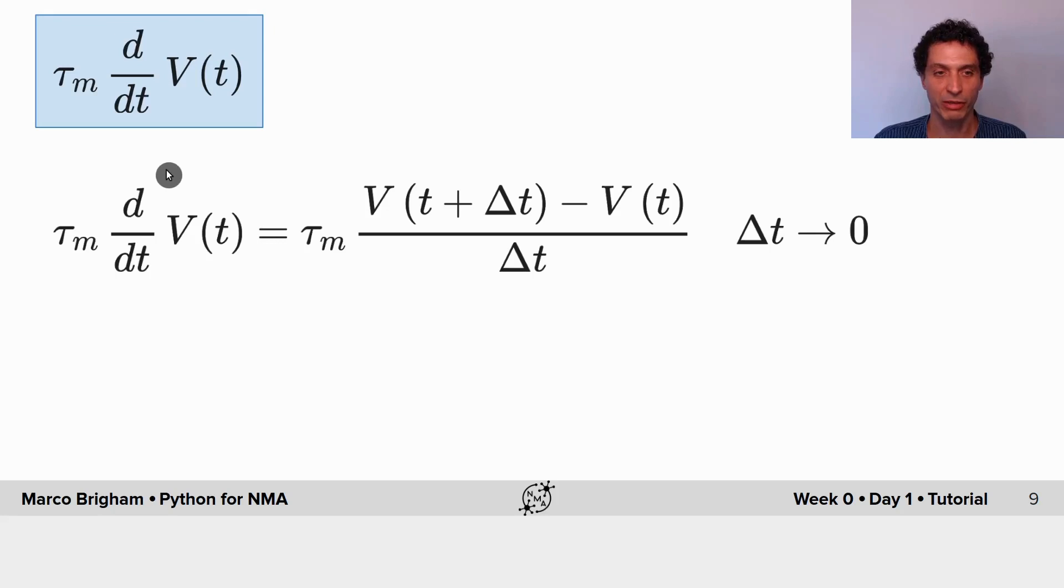The definition becomes a derivative when this small step delta t goes to zero, but we don't make delta t go to zero—we just use a small delta t.